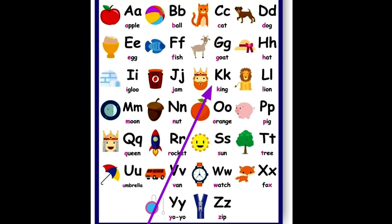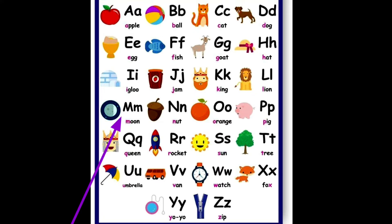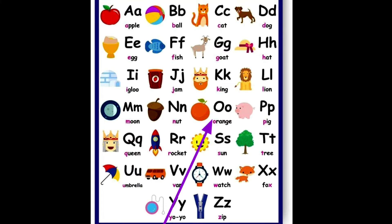K for king, L for lion, M for moon, N for nut, O for orange.